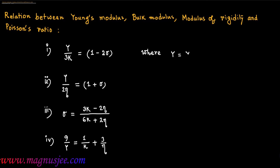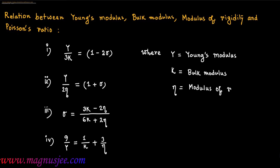Where Y equals Young's modulus, K equals Bulk modulus of elasticity, η equals Modulus of Rigidity, and σ equals Poisson's ratio.